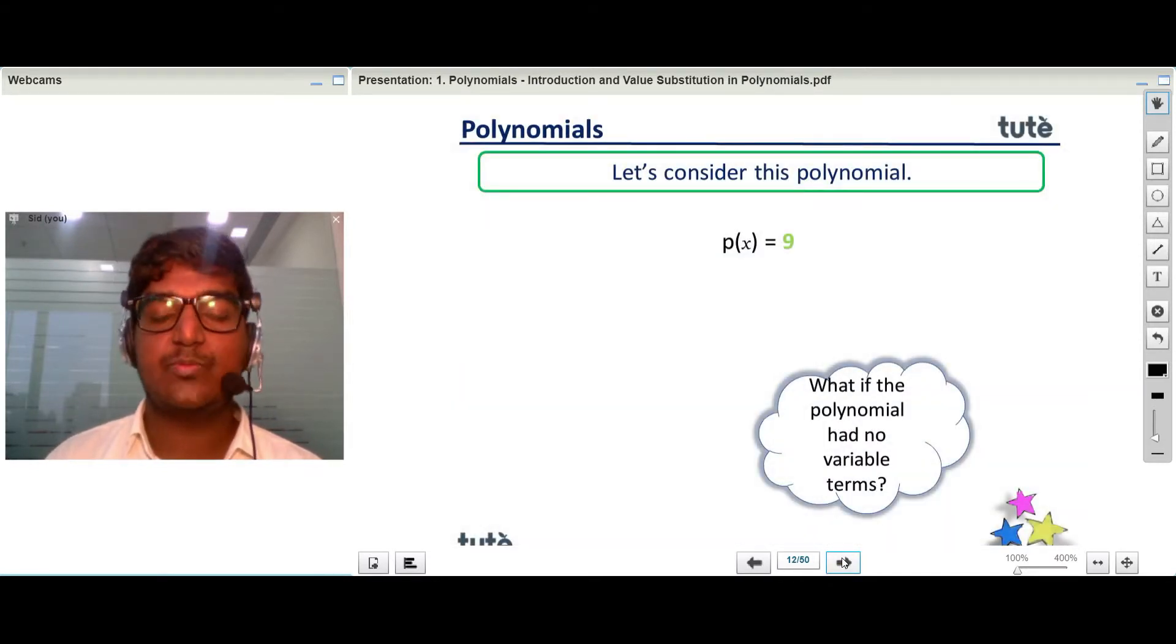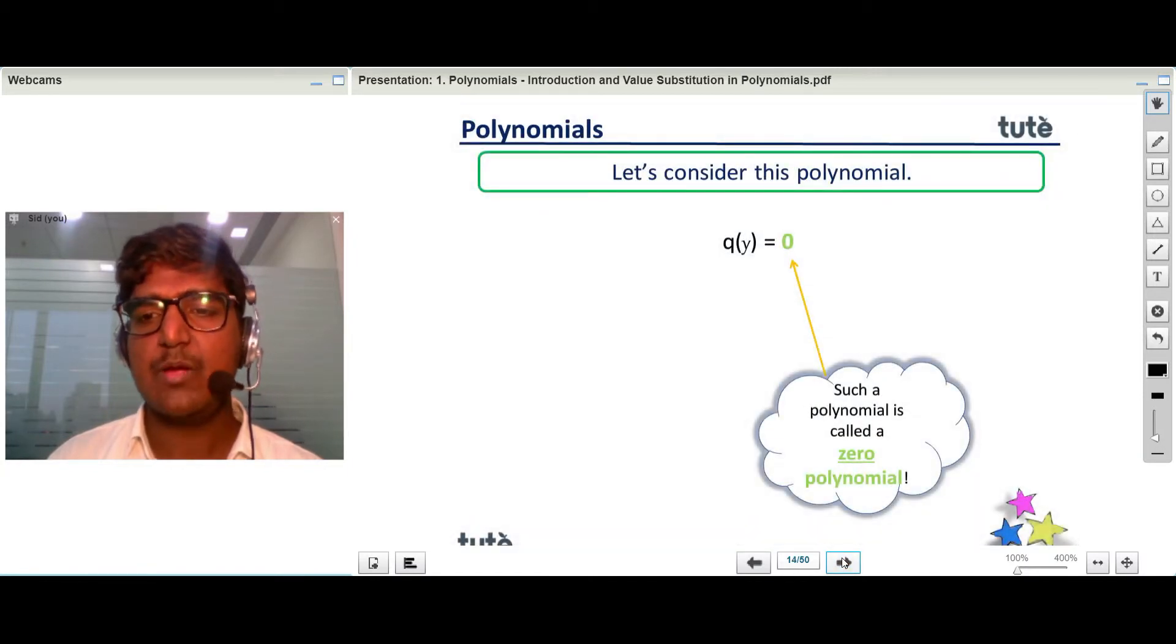Let's consider this polynomial which is given by p(x) = 9. But if you see, this one doesn't have any variable terms. It just has a constant term, and such a polynomial is called a constant polynomial. But if the constant polynomial's value was 0, then we call this polynomial a zero polynomial.